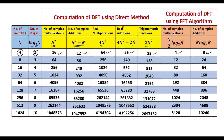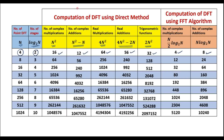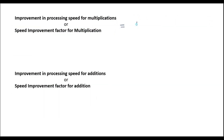Now we will see the speed improvement factor for multiplication, also known as improvement in processing speed for multiplication. The formula is: number of complex multiplications in the direct method divided by number of complex multiplications in the FFT algorithm, that is N squared divided by (N/2) log N to the base 2. This formula gives the speed improvement factor for multiplication.